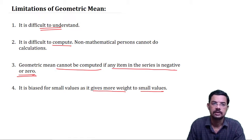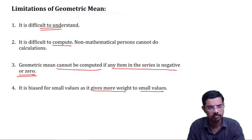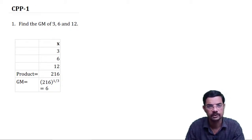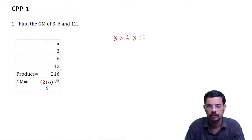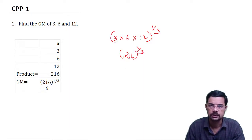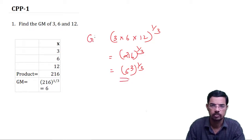Let us understand these concepts using some examples. For the first example, find the geometric mean of 3, 6 and 12. We multiply all observations and then take the third root: 3 × 6 × 12 equals 216, raised to 1 by 3. Since 6 cubed equals 216, this gives us 6 raised to 3, the whole raised to 1 by 3, which equals 6. So the geometric mean is 6.